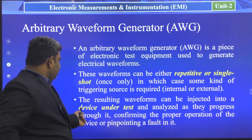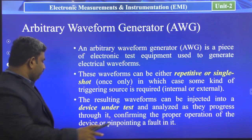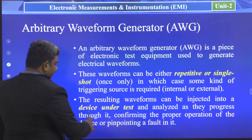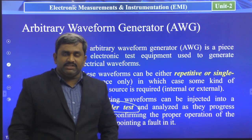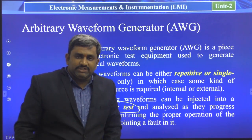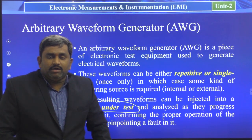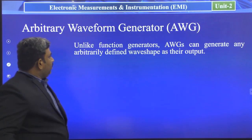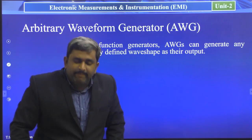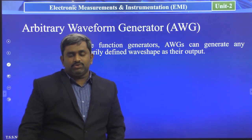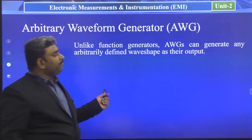The resulting waveforms can be injected into a device under test and analyzed as they progress through it, confirming the proper operation of the device or pinpointing a fault in it. We have function generators for implementing sine wave, square wave, or triangular wave. So if we already have function generators, what is the need for these arbitrary wave generators? Unlike function generators, AWGs can generate any arbitrarily defined wave shape as their output.